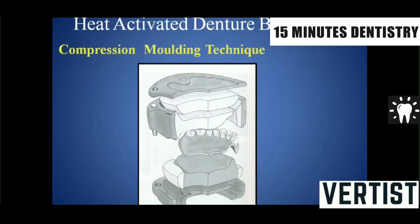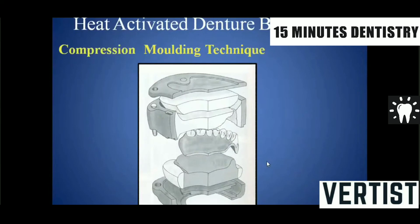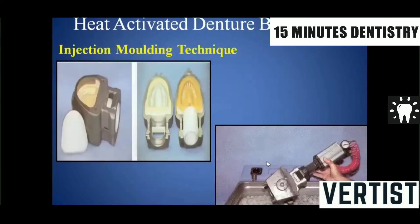In the compression molding technique, the cast with the denture base and teeth is placed in the flask, which consists of the counter flask, plaster, and lid. After de-waxing, the heat-cured acrylic resin is packed into the prepared mold cavity. Heat-activated denture base resin can also be processed using the injection molding technique.